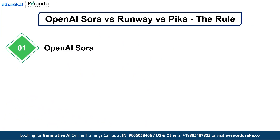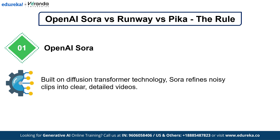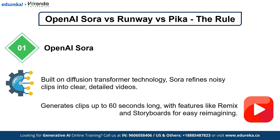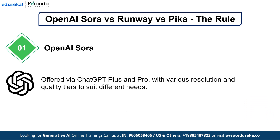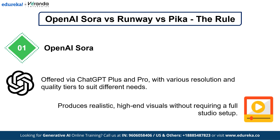Let's begin with OpenAI Sora. Sora is built on cutting-edge diffusion transformer technology that refines initial noisy video sequences into clear, detailed clips. This model can generate videos up to 60 seconds long and comes with exciting features such as remix and storyboards, which allow you to tweak and reimagine your creative ideas with ease. Sora is available through ChatGPT Plus and GPT Pro subscriptions with varying resolution options and quality tiers. Its impressive ability to produce realistic visuals makes it a strong contender for those looking to achieve a cinematic look without a studio setup.